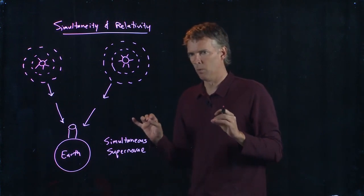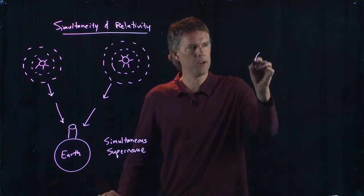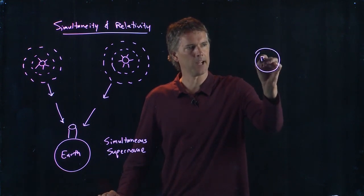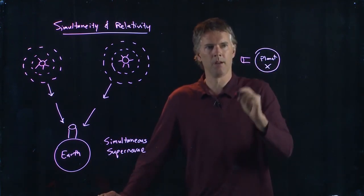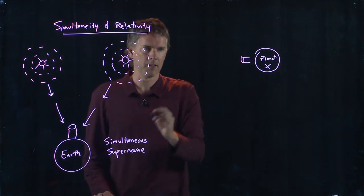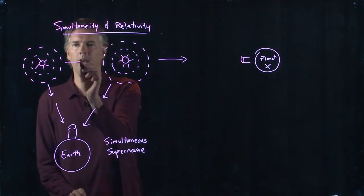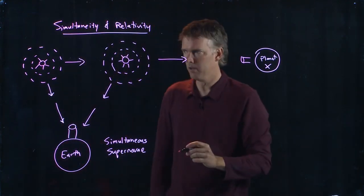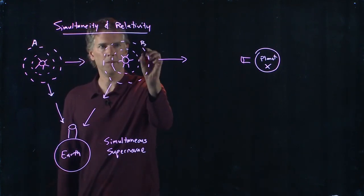But what happens to the observer that is sitting over here on planet X? They're sitting there with their telescope, and they're looking at this thing, and they get light from this one, and then sometime later they get light from that one. So if this is planet A and this is planet B, they wouldn't say simultaneous.